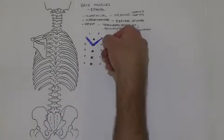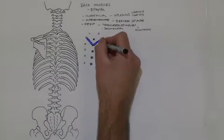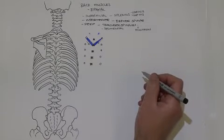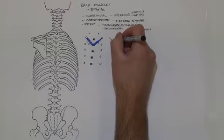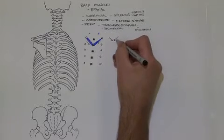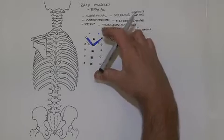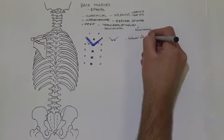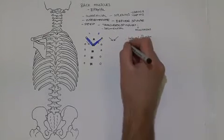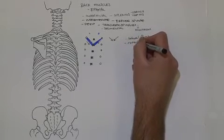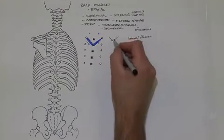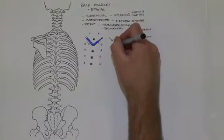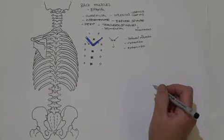We know that the insertion moves towards the origin. Drawing an arrow to represent the line of pull on the right, and an arrow on the left — if we bring them toward the midline, a single muscle acting alone can compress the levels and create lateral flexion. If contracted on one side, unilaterally, it creates rotation. If both muscles are used together, a bilateral action, this creates extension of the vertebral column.